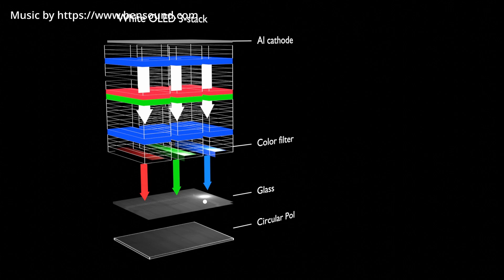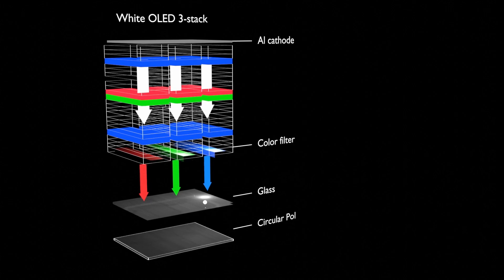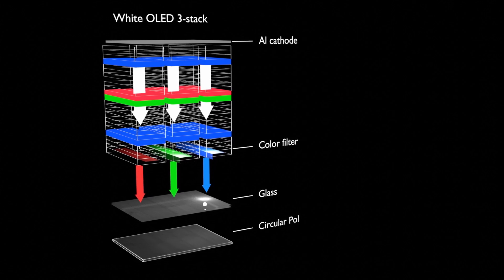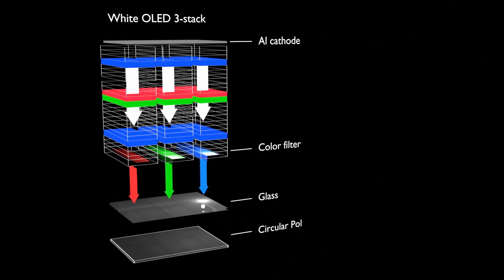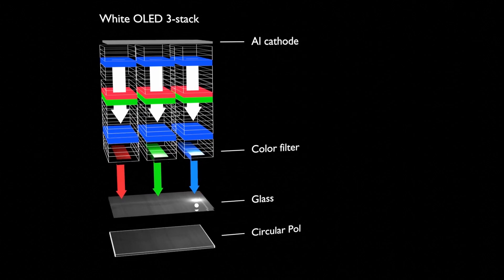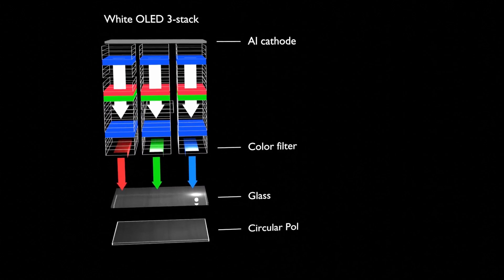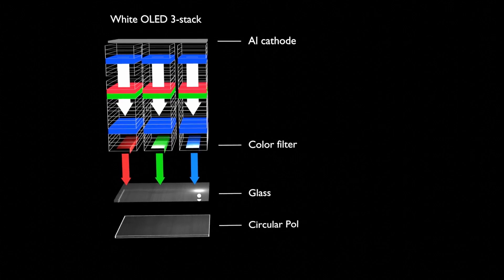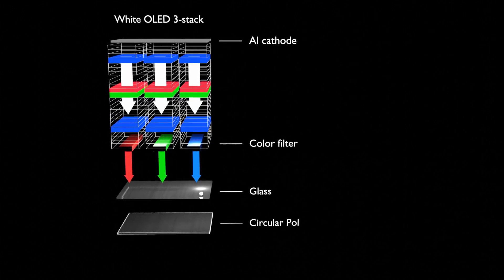First, let's review the basic structure of white OLED. The main component is a circular polarizing plate to prevent the reflection of metal wiring or electrodes by external light, then a color filter to extract red-green-blue color by filtering white, and a 3-stack structure OLED is formed on a glass substrate.